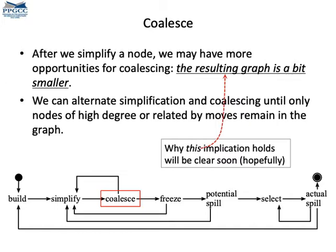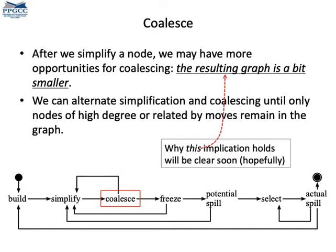After Simplify, we have a phase called Coalesce. In this phase, we try to merge nodes that are related by copies. These nodes will receive the same color, as they become a single vertex. Coalescing is this problem of trying to assign copy-related variables to the same register.